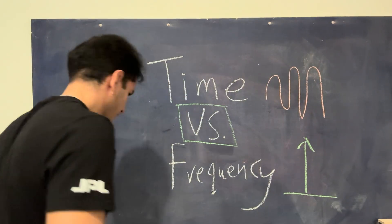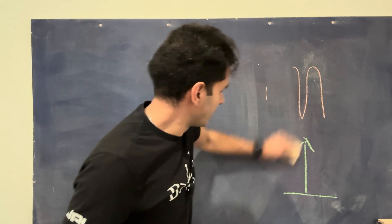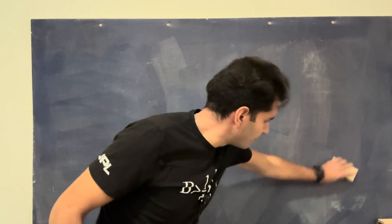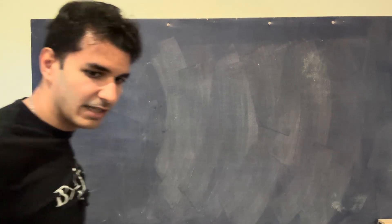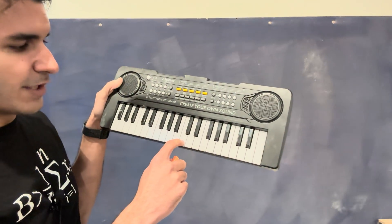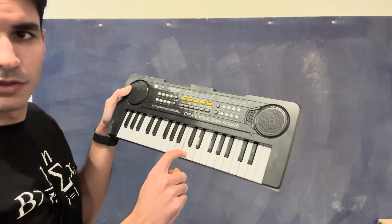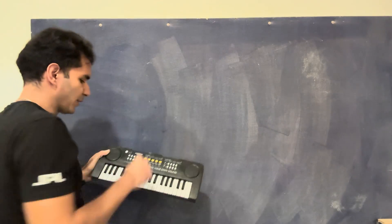And basically, what I have over here is this keyboard. So what I'm going to do is I'm just going to press a few buttons on it, and we're going to plot what those buttons or notes look like in time, and then we're going to use the Fourier transform to analyze them. So over here on a keyboard, I have this button over here, which is basically like a C note.